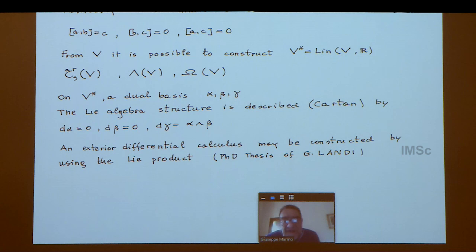My favorite example to illustrate the previous remarks is provided by the Heisenberg-Weyl algebra. At the mathematical level, the Heisenberg-Weyl algebra is simply a three-dimensional vector space with the commutation relation you can see here. From this vector space you may construct the dual space, the tensors, the anti-symmetric tensor, and the anti-symmetric forms.